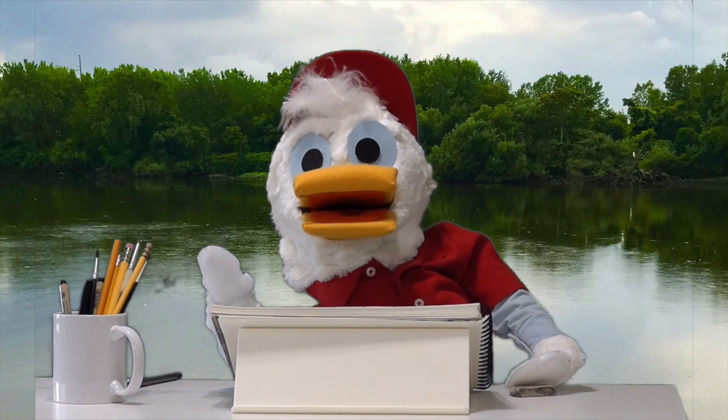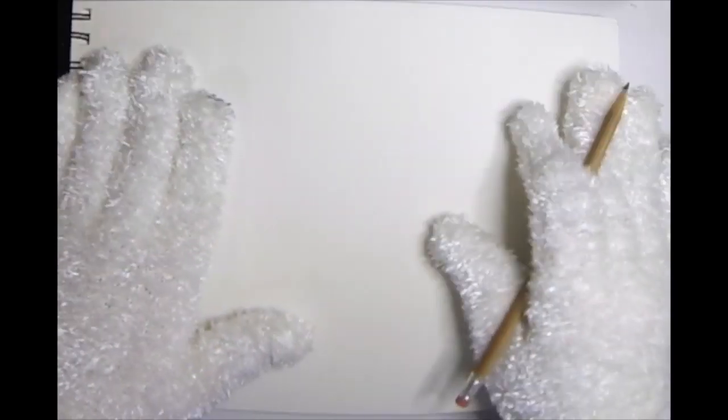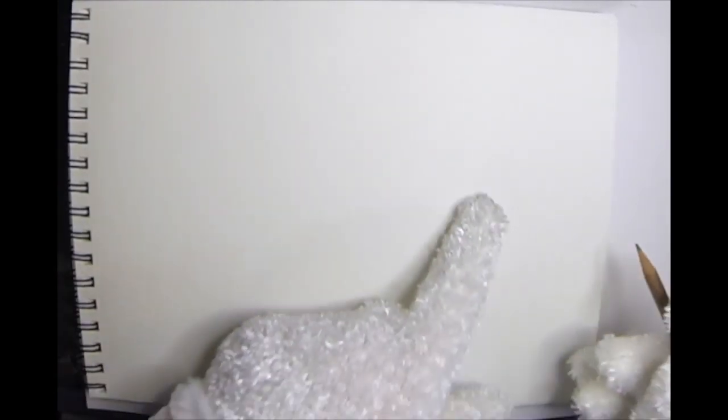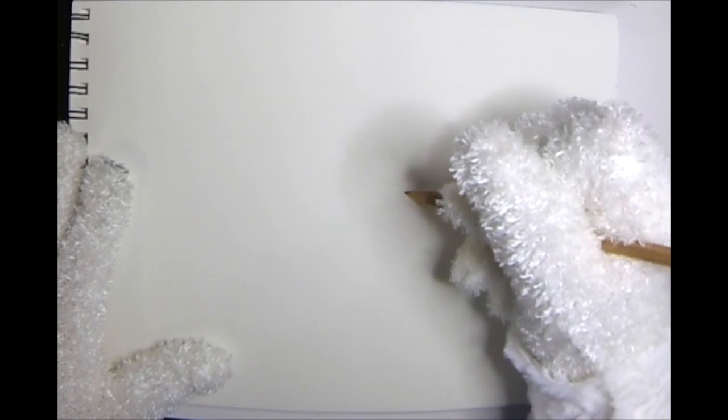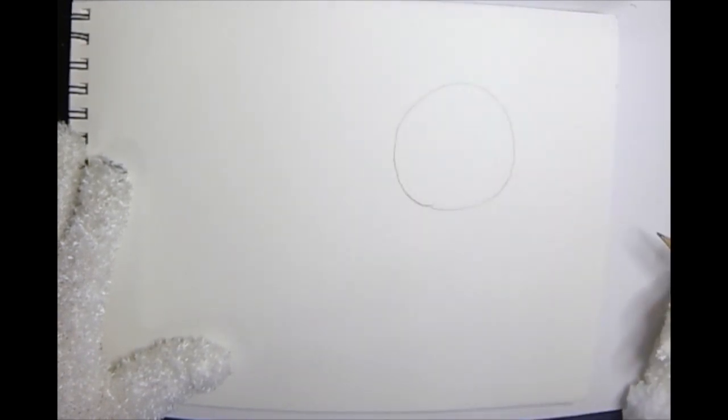You ready to get started? I know I am. Let me grab my pencil and I'll show you what to do. All right, I've got my pencil and a nice clean sheet of paper. I'm going to start over on the right side and I'm going to make a circle. There it is. Nice round circle.